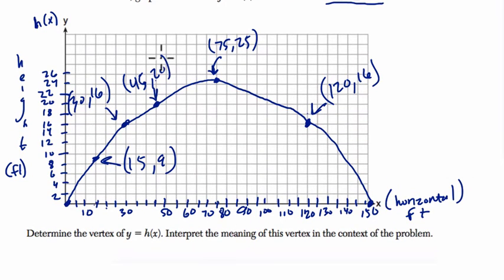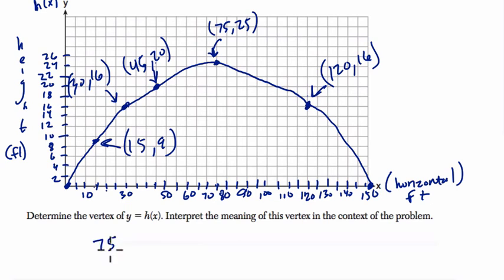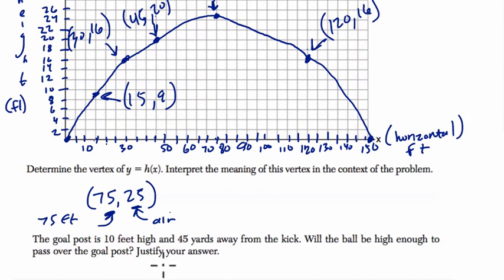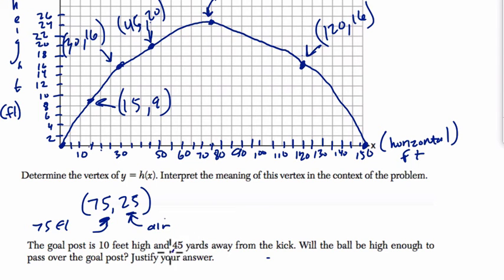Determine the vertex. We have to determine the vertex to make the sketch of this thing. So it's 75, 25. This means, if you want to write down the context of this problem, it's 75 feet along the horizontal axis. The ball is 25 feet in the air. So say that in a complete sentence. We have 75 feet on the horizontal is 25 feet in the air. And they want to know, if the goal post is 10 feet high and 45 yards away from the kick, will the ball be high enough? Well, this is hard. 45 yards away from the kick. So the goal post is 10 feet high and 45 yards away from the kick. So every yard has 3 feet. So that is 120. 45 times 3 is 135 feet.